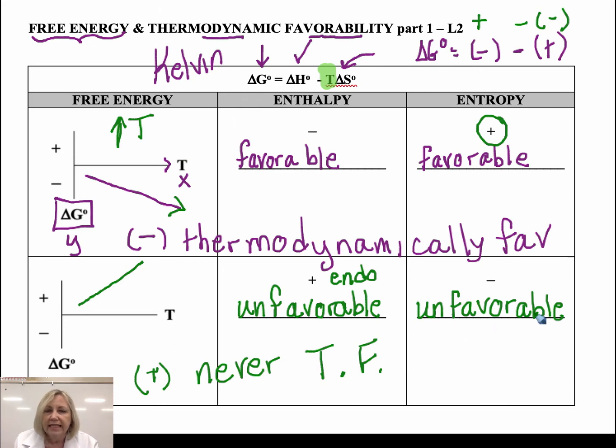Okay, all right. And you notice that an increase in temperature made it less and less favorable because that increase in temperature always magnifies your entropy. So it becomes less and less favorable.